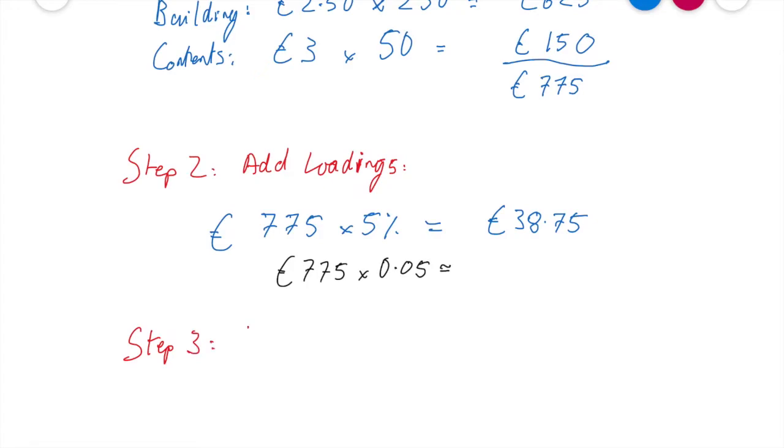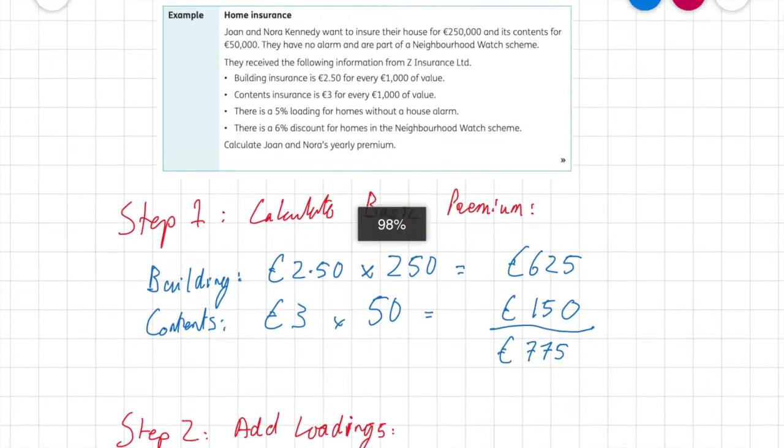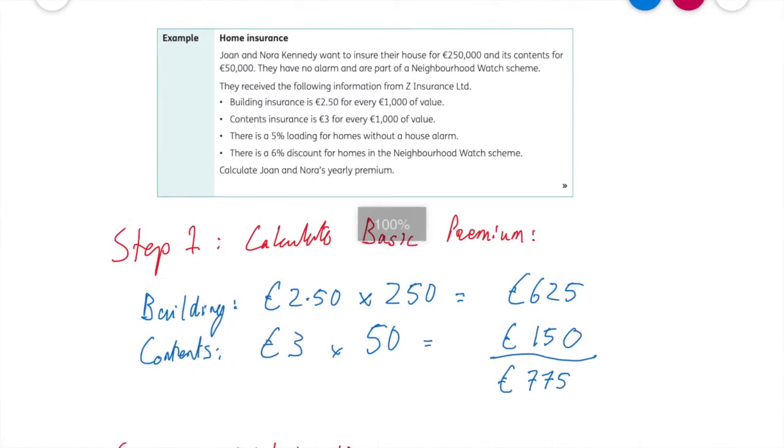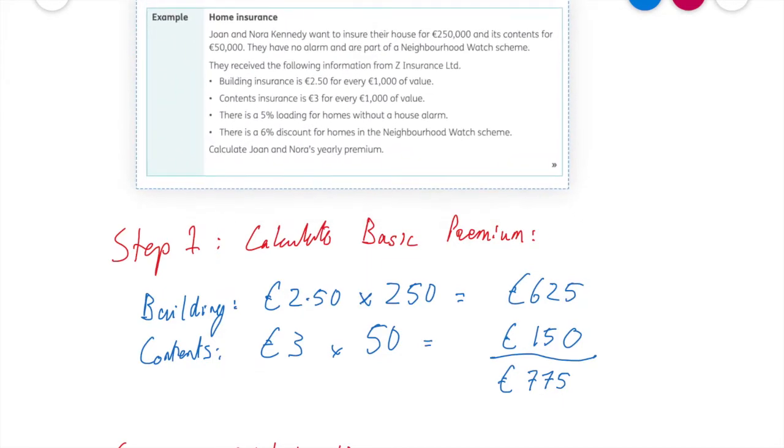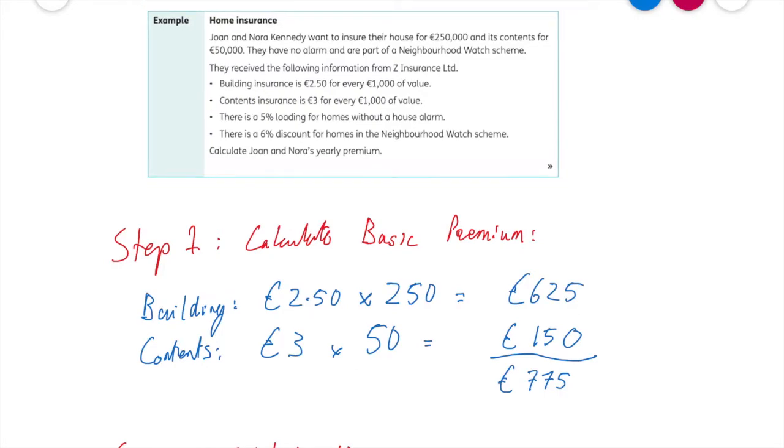Now step 3, I need to find out the discounts. So I'll be subtracting the discounts, so it's my less discounts. So what are the discounts in this question going to be? Let's pop back to the question. Here's the question, there we go, and let's see what it says. There is a 6% discount for homes in the Neighbourhood Watch Scheme. Are we in the Neighbourhood Watch Scheme? Yes, we are. It says it here.